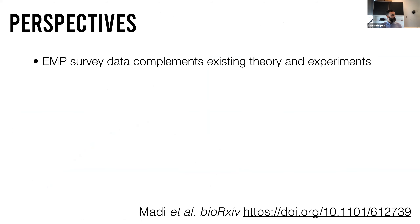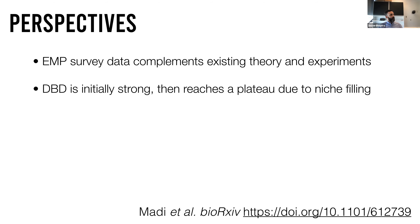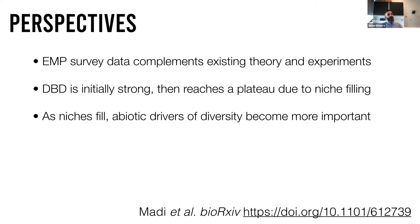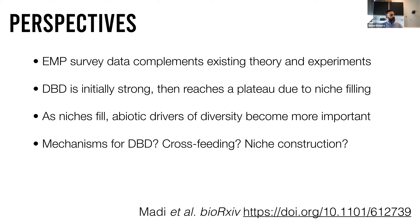To summarize, this Earth Microbiome Project survey complements existing theory and experiments from experimental evolution, providing a bird's-eye view of the most predominant patterns in nature. DVD seems to be initially strong in less diverse communities, but as diversity fills up we see a plateau, presumably as niches are filled. As niches fill, abiotic drivers may become more important. Mechanisms remain unclear — niche construction and cross-feeding could be important — but more work is needed.